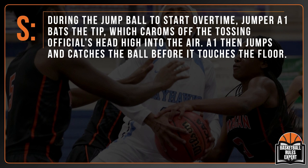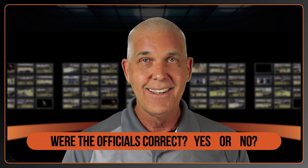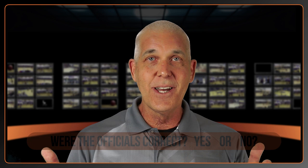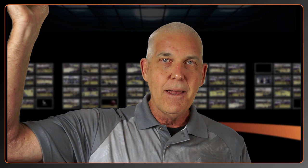During the jump ball to start overtime, jumper A1 bats the tip which caroms off the tossing official's head high into the air. A1 then jumps and catches the ball before it touches the floor. The officials rule this to be a legal play. Were the officials correct, yes or no? Kind of a humorous situation — hopefully nobody's hurt.